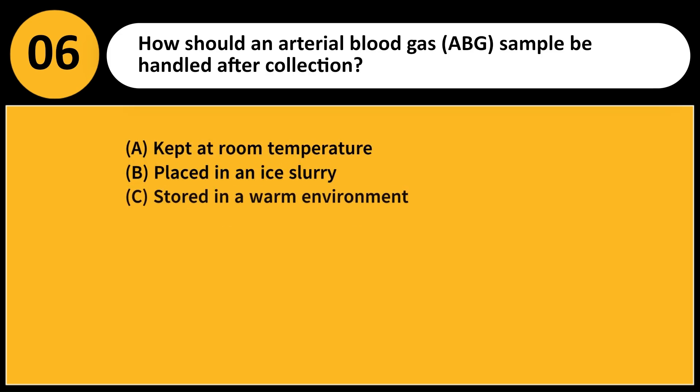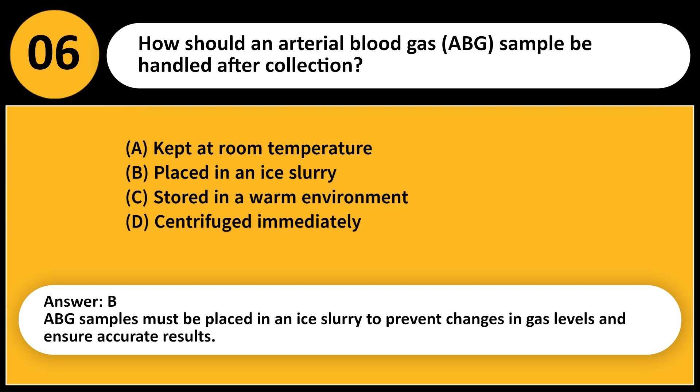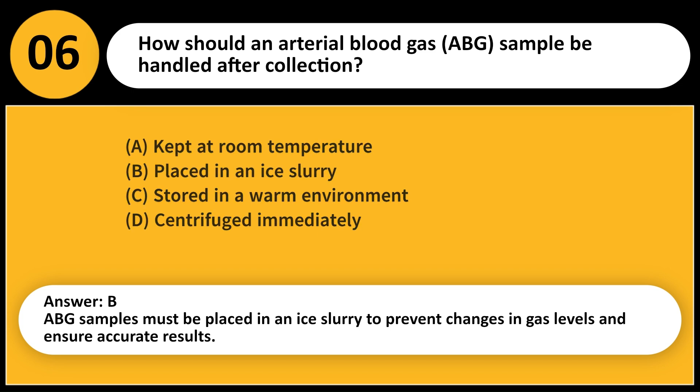How should an arterial blood gas (ABG) sample be handled after collection? A. Kept at room temperature. B. Placed in an ice slurry. C. Stored in a warm environment. D. Centrifuged immediately. Answer: B. ABG samples must be placed in an ice slurry to prevent changes in gas levels and ensure accurate results.